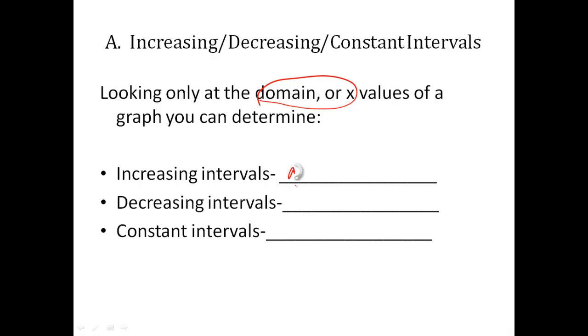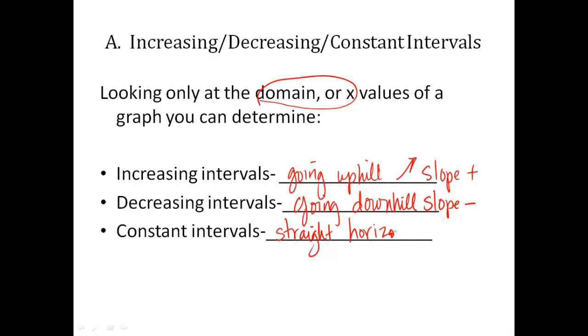Visually, it's going uphill. The slope is going up. Decreasing means the slope is going downhill or in a negative direction. So this is slope is positive, slope is negative, or constant means it is a straight horizontal line. Horizontal segment, I should say. You should know that that's where the slope of a line is zero.